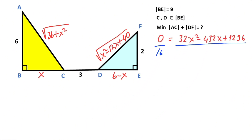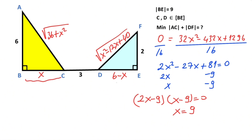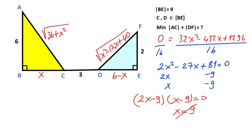Dividing both sides of the equation by 16, we get 2x squared minus 27x plus 81 equals zero. You know that 2x squared factors as 2x times x, and 81 equals negative 9 times negative 9. So (2x minus 9)(x minus 9) equals zero. Therefore x equals 9 or x equals 4.5. Since x must be less than 9, we take 2x minus 9 equals zero, giving x equals 4.5.